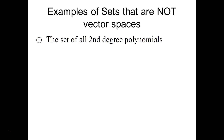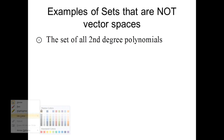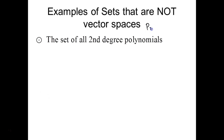First up is the set of all second-degree polynomials. You might say, wait, we just did that and showed all ten axioms. The difference is that before it was labeled as P2, and P2 is the set of all polynomials of degree two or lower — less than or equal to two — not exactly equal to two.